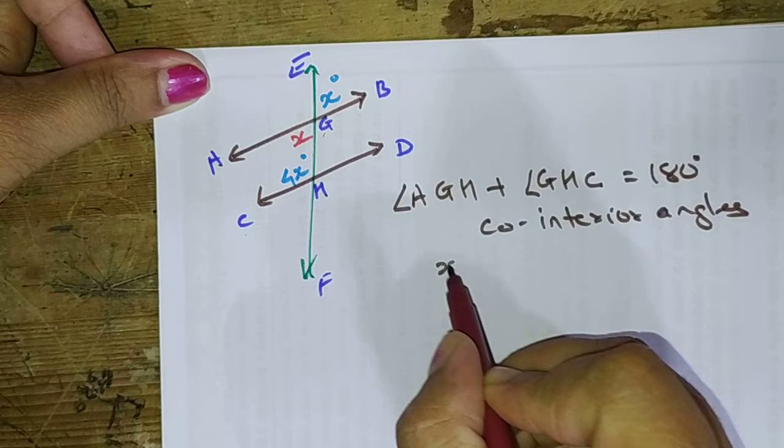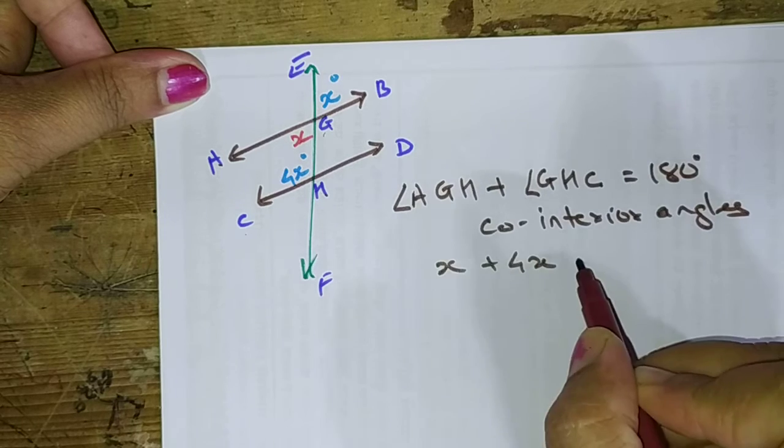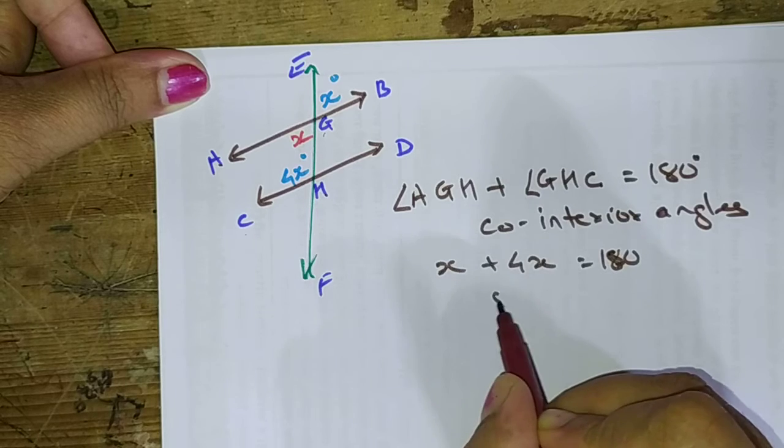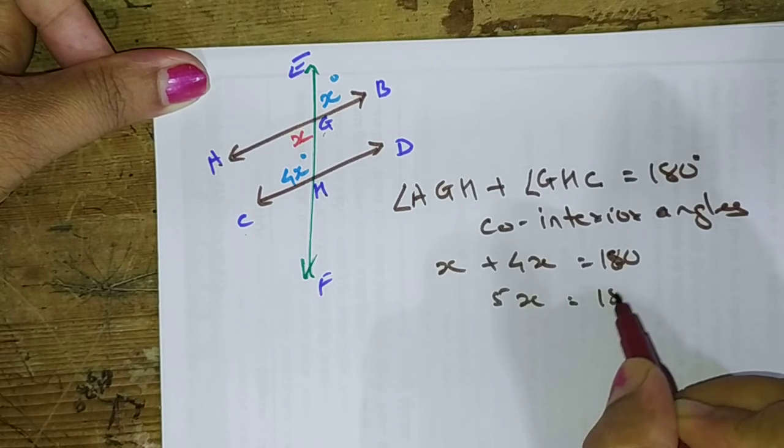So here we can write X plus 4X equals 180. So we get 5X equals 180.